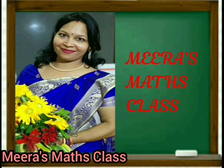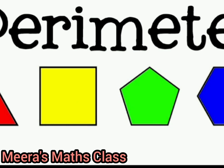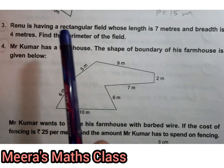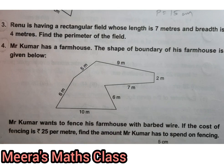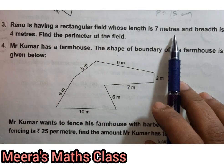Hello my dear children, welcome to Meera's Math Class. Now let's see the third number of brain teasers. Renu is having a rectangular field whose length is seven meters.